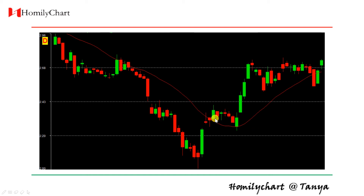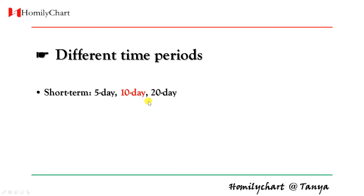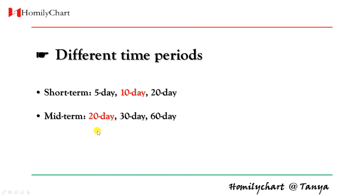Because it means the current price is stronger than the average price within 20 days. We have different time periods for MA. For example, for short term, we have 5-day, 10-day, and 20-day. Among them, 10-day is the most popular.